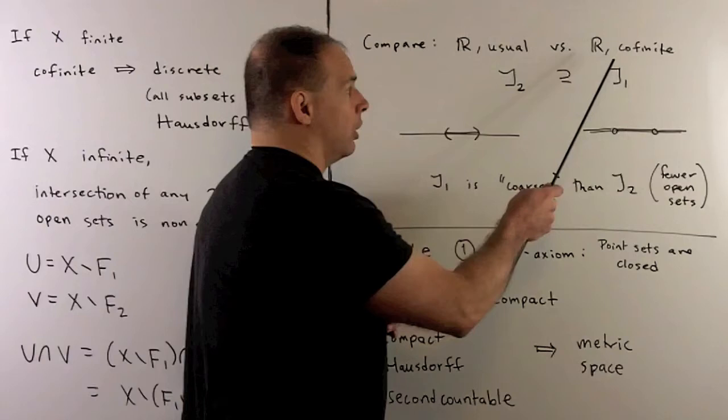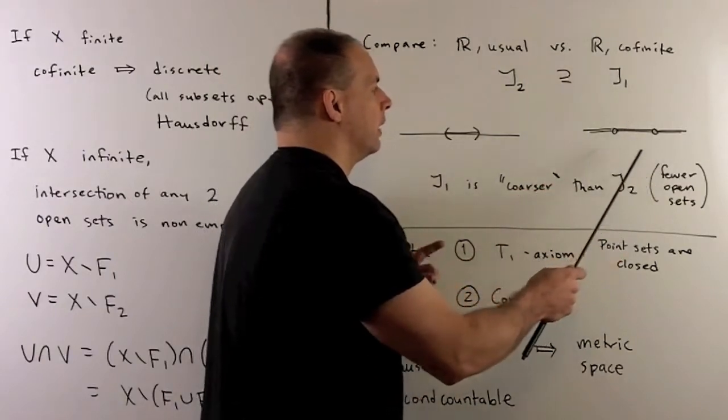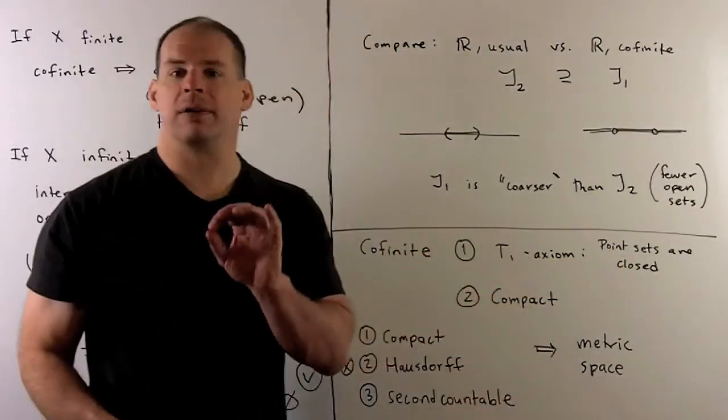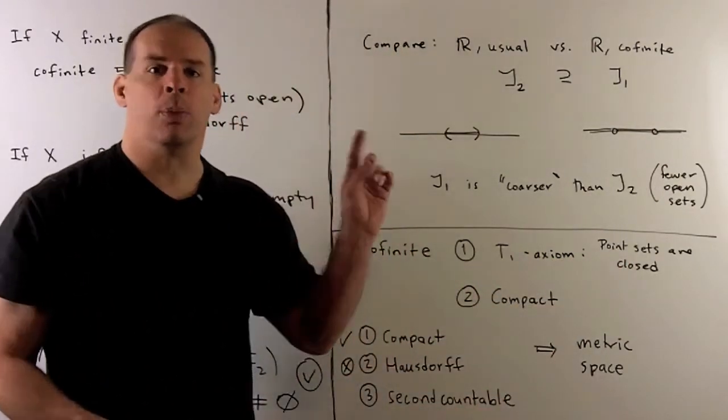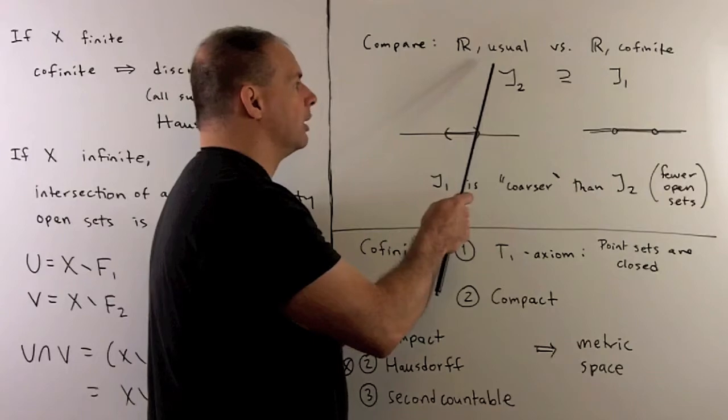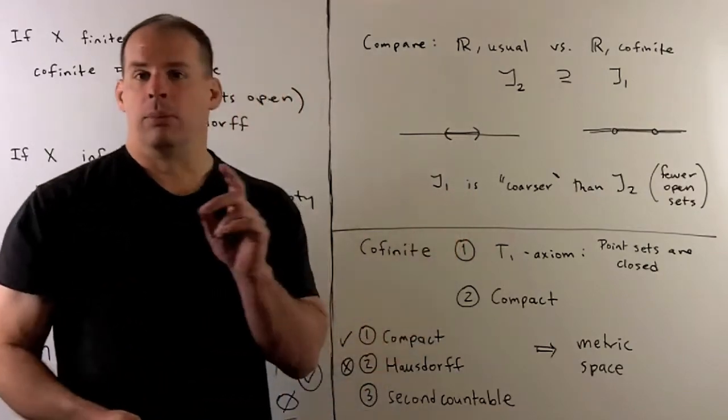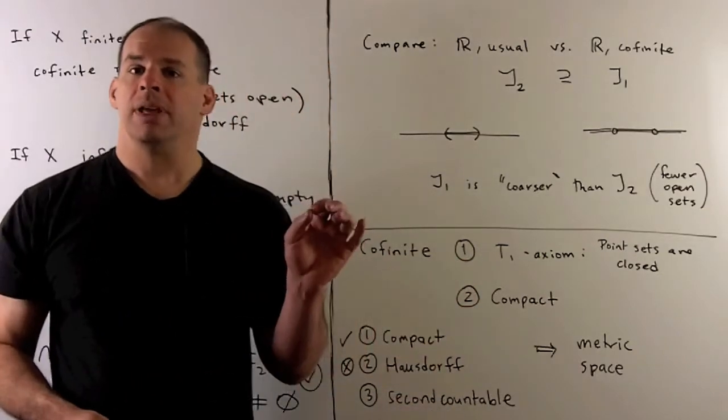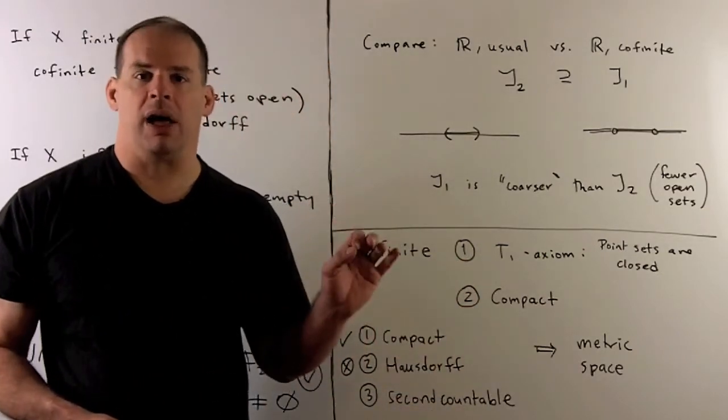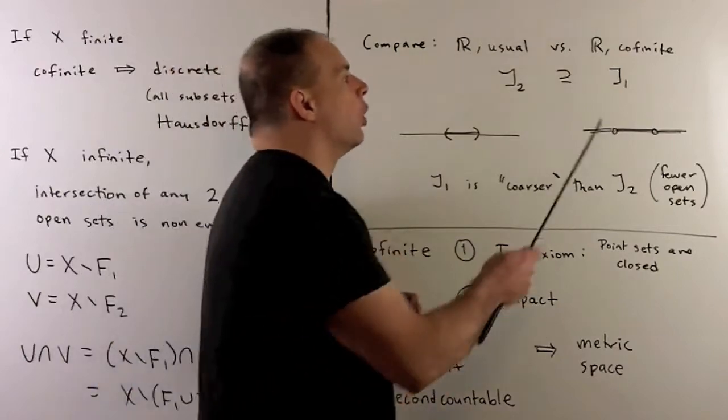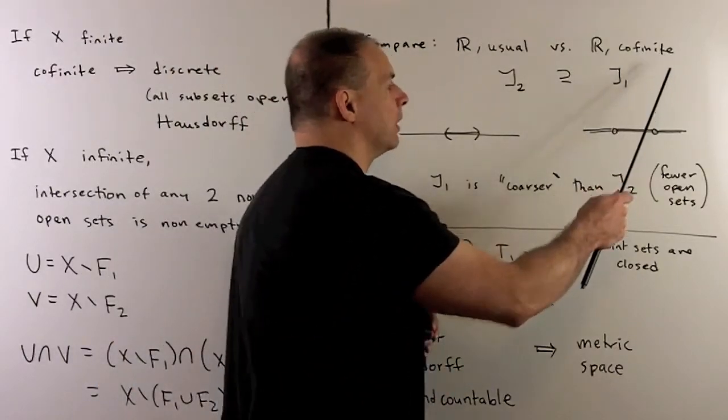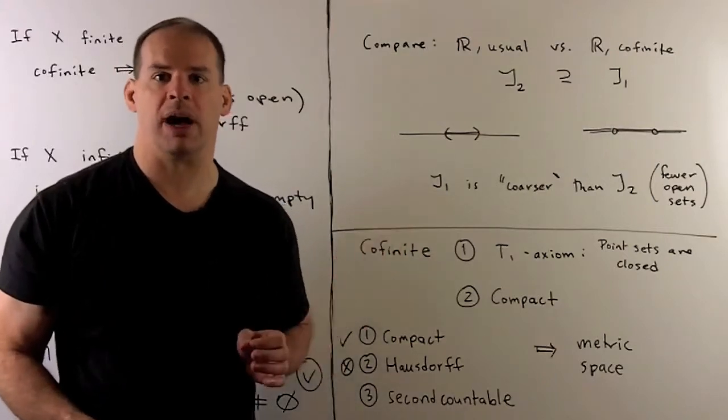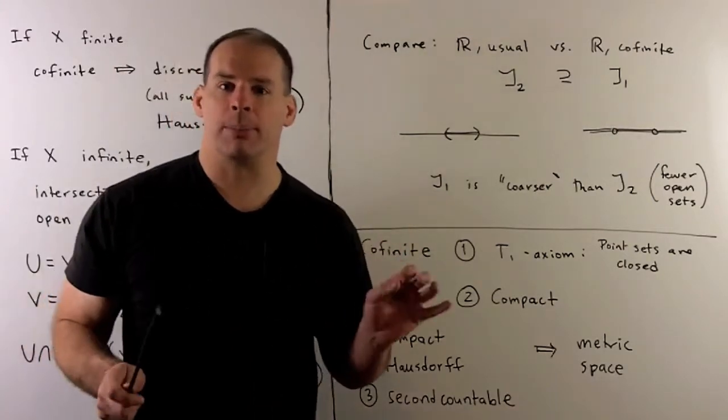If we take an open set from here, all of these subsets where I take the real line, discard finite set of points, it's going to be an open subset in the usual topology. On the other hand, the interval, say from 0 to 1, is not going to be in the cofinite topology. So we're going to have fewer open subsets in the cofinite topology, which means the cofinite topology is coarser than the usual topology. So not as much separation of points.